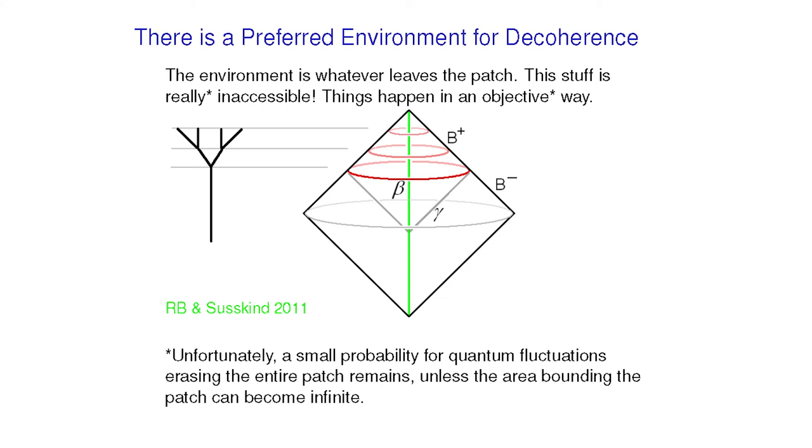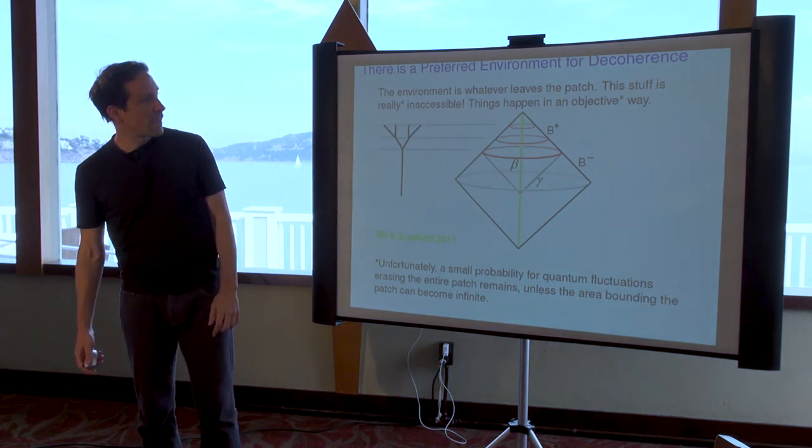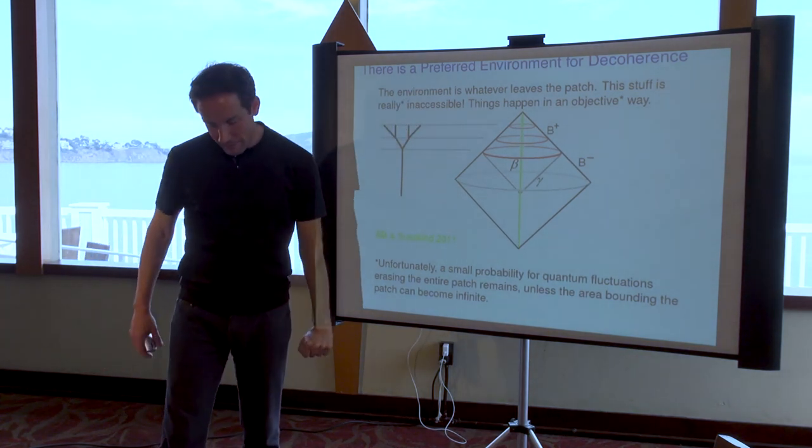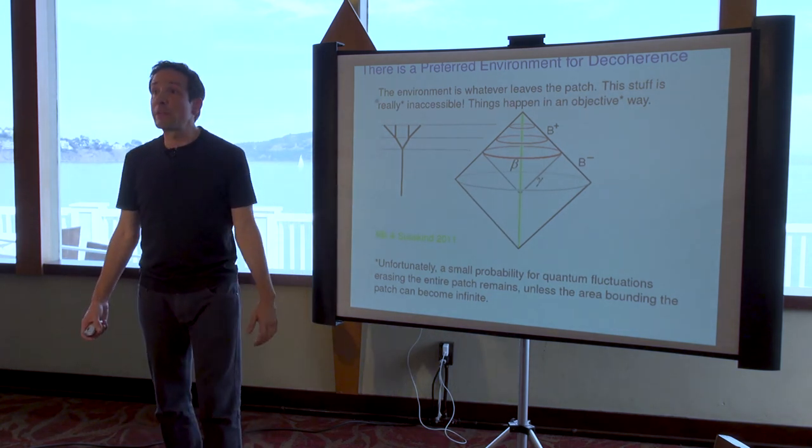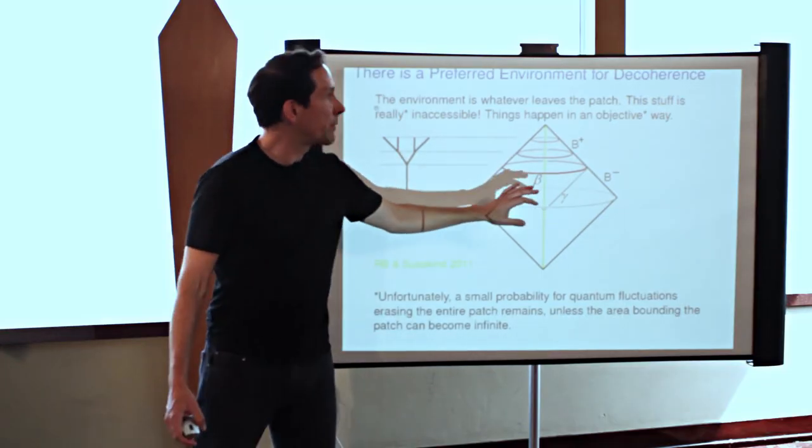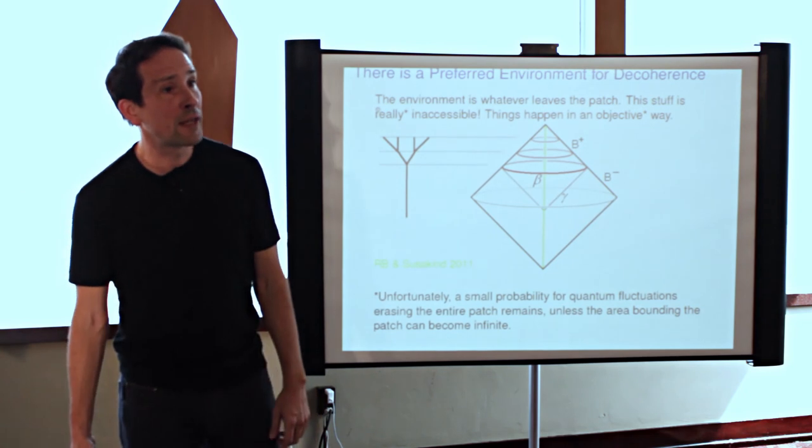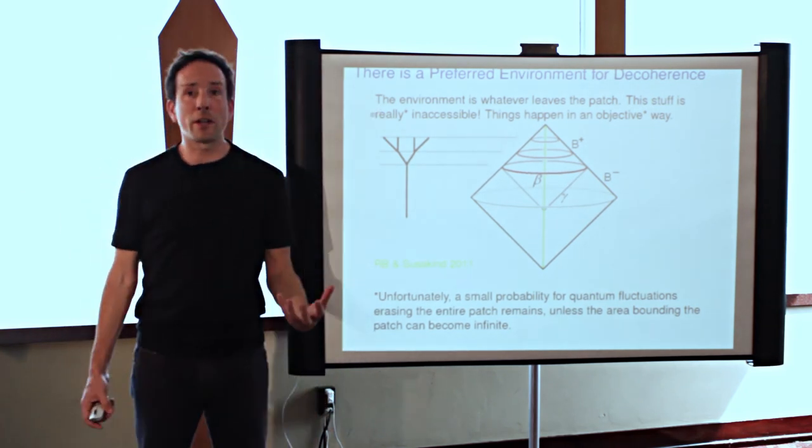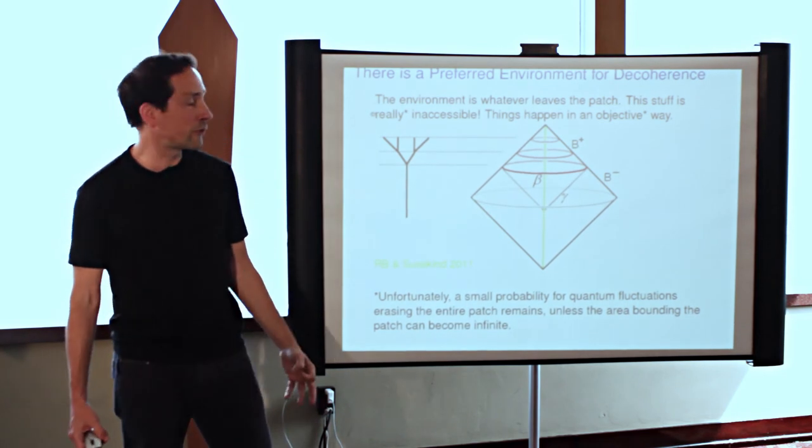So the environment in this picture is whatever leaves the patch, it's whatever moves to space time regions from which we can never receive a signal, no matter how long we wait. And so in that sense, things can still happen in an objective way in cosmology. Now I put a little asterisk here because the cosmology itself ultimately will be described by quantum physics.